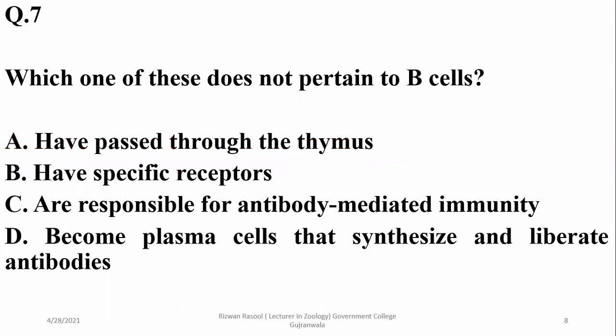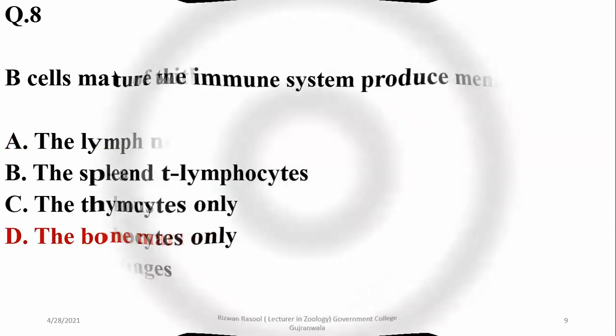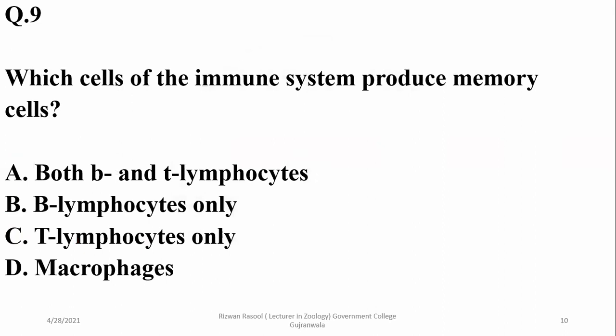Question seven: which of these does not pertain to B cells? B cells have not passed through the thymus — they do have specific receptors and are responsible for antibody-mediated immunity. They become plasma cells that synthesize and liberate antibodies. B cells mature within the bone marrow, while T cells mature within the thymus.